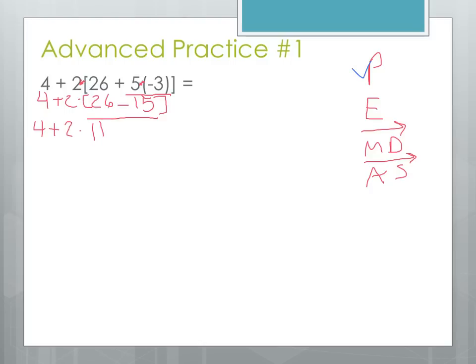Our parentheses are all done. We can check that off. We don't have any exponents, so we can move down to multiplying and dividing. So we have 2 times 11 next. 2 times 11 is a positive 22. So we get a plus 22, and that 4 that we haven't used. And we're going to finish off this by adding those last two numbers together to get a positive 26.